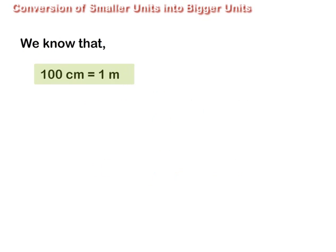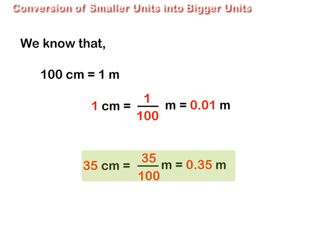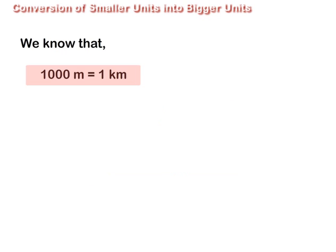100 cm is equal to 1 m. Therefore, 1 cm is equal to 1 upon 100 m, which is equal to 0.01 m. Similarly, 35 cm is equal to 35 upon 100 m, which is equal to 0.35 m.